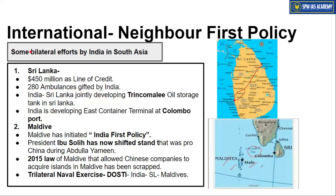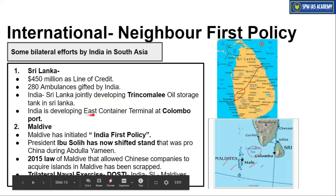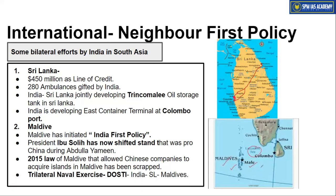India has also taken bilateral efforts to strengthen ties in South Asia while neglecting Pakistan. With respect to Sri Lanka, India has established a $450 million line of credit, gifted 280 ambulances, and is jointly developing the Trincomalee port's oil storage tank system with the Sri Lankan government. India is also developing the east container terminal at Colombo port of Sri Lanka.